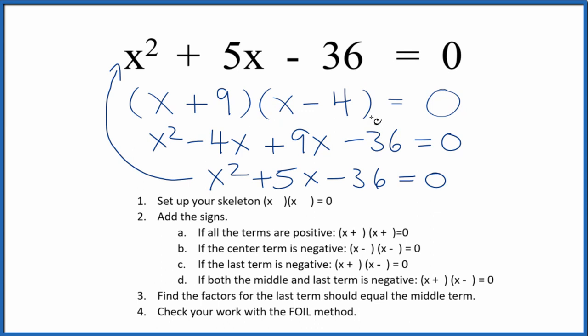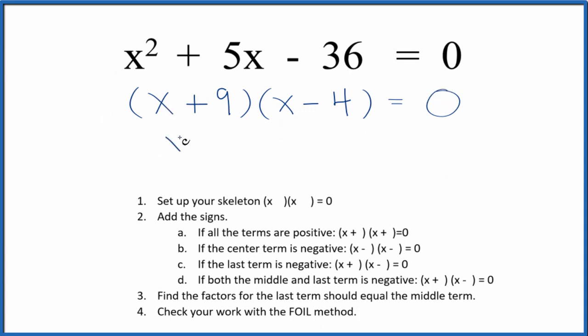Let's find the values for x now that will make this all equal to 0 here. So 0 equals 0. That would be a true statement. So x plus 9 equals 0, x equals negative 9. Over here, x minus 4 equals 0, x would equal positive 4.